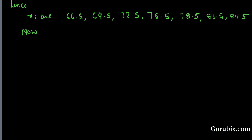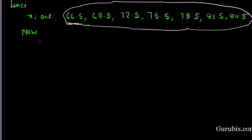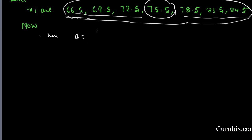We can see that the values of xi are bigger, so we have to choose assumed mean method or step deviation method to solve this question. Hence, we choose the step deviation method. Here, a is equal to the midterm of xi. We can see the midterm of xi is 75.5, so a is equal to 75.5.